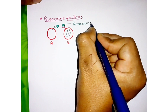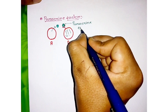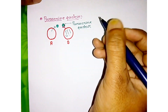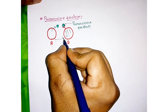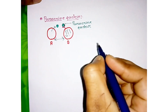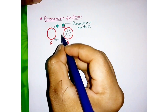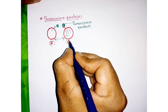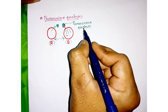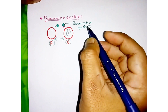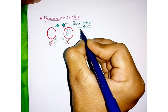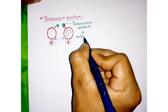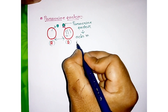Paracrine factors exert their effect in adjacent cells. If the distance between cell A and B increases, the paracrine factor does not work. Paracrine factors always act in adjacent cells.